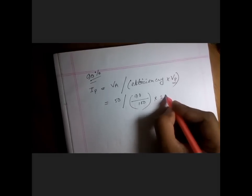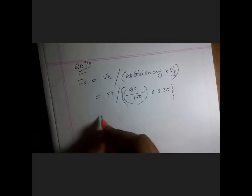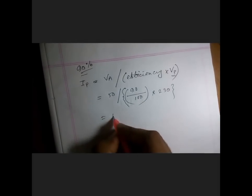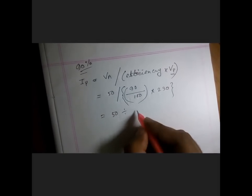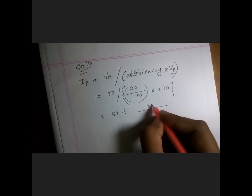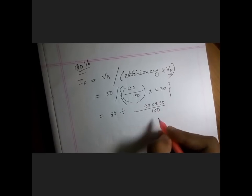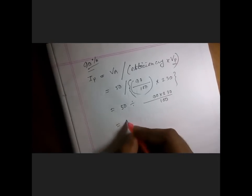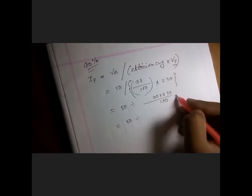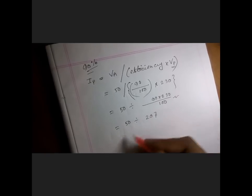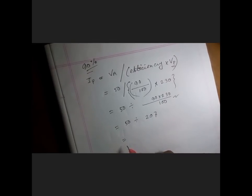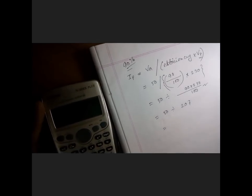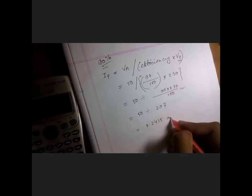Let's take a bracket here. It's 50 divided by 19 to 230 by 100. So here it's 50 divided by this value is about 207. So 50 if I calculate here, 50 divided by 207, it will be 0.2415 amps.